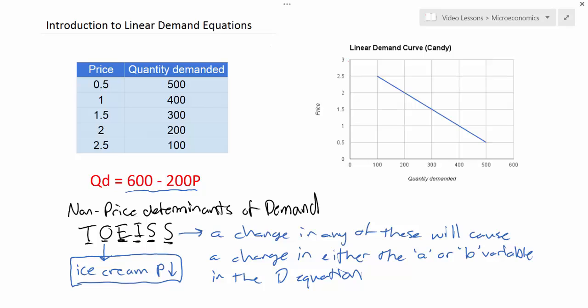Therefore, if ice cream gets cheaper, the demand for candy could decrease. Why is that? Because the cheaper substitute will now be more attractive to consumers and therefore the demand for the good in question will fall.